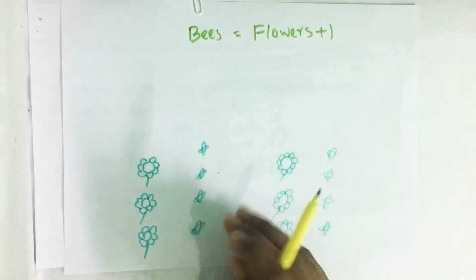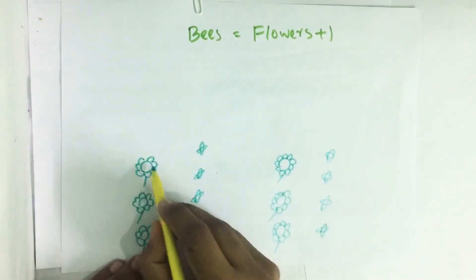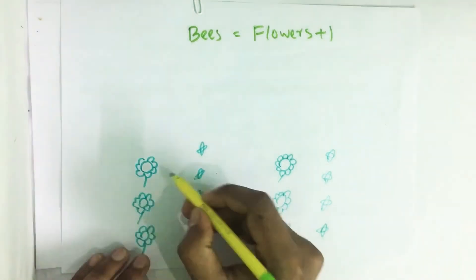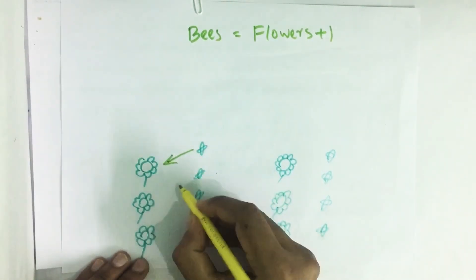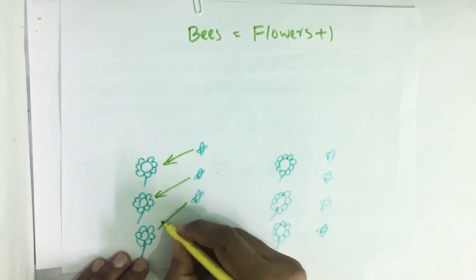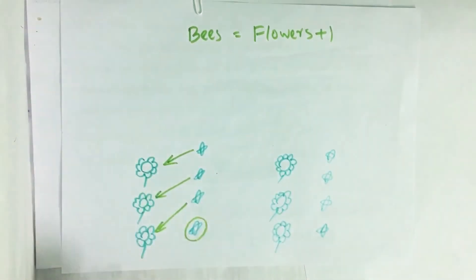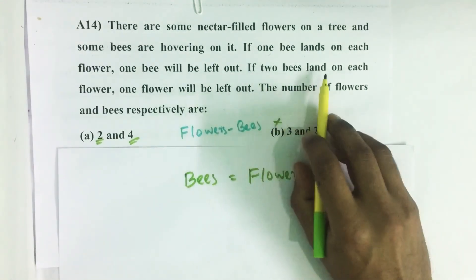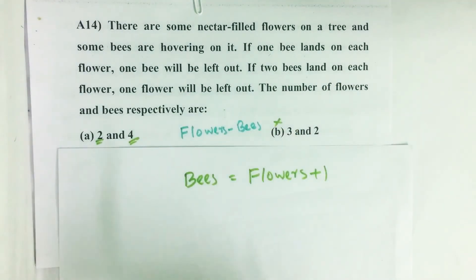So here you can see these are the three flowers and these are the four bees. If each bee is going to each flower, then one bee will be left out. Then the second statement says if two bees land on each flower, one flower will be left out.